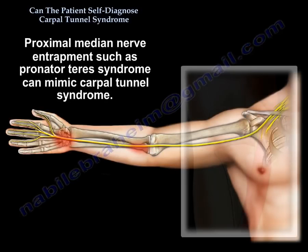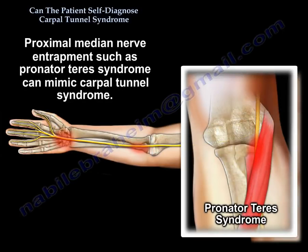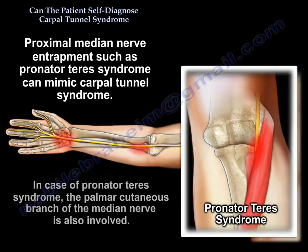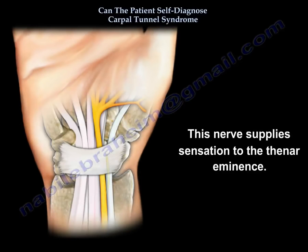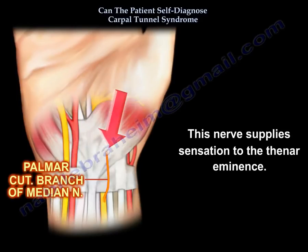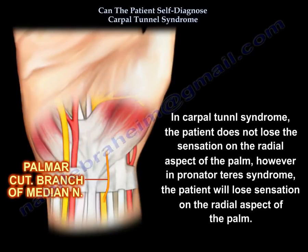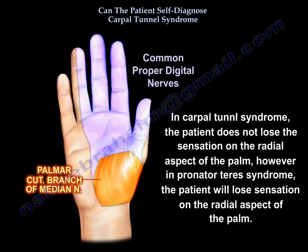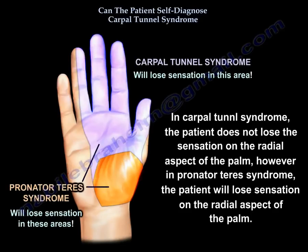Proximal median nerve entrapment such as pronator teres syndrome may also mimic Carpal Tunnel Syndrome. In pronator teres syndrome, the palmar cutaneous branch of the median nerve is also involved. This nerve supplies sensation to the thenar eminence. In Carpal Tunnel Syndrome, the patient does not lose sensation on the radial aspect of the palm; however, a patient with pronator teres syndrome will lose that sensation.